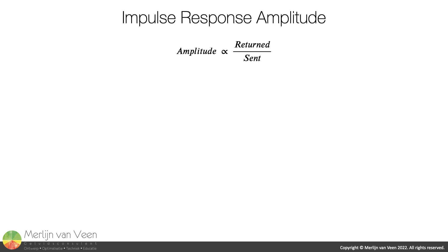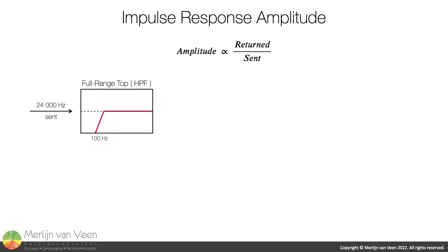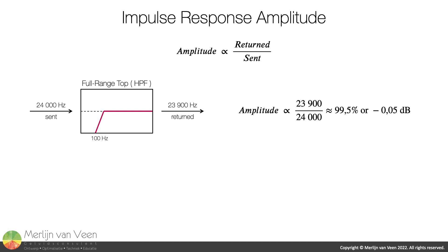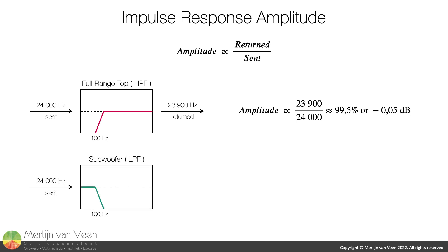The amplitude of an impulse response is proportional to the ratio of the information received by the analyzer with respect to the information transmitted by the analyzer. Assuming a sample rate of 48 kHz, when 24,000 Hz worth of pink noise is injected into the full-range loudspeaker, pretty much all of it is returned, so the impulse response's amplitude suffers from little to no attenuation. However, when the same 24,000 Hz worth of pink noise is injected into the subwoofer, less than 1% of all available information is returned. As such, the amplitude of its impulse response is expected to cave by at least 99.5% on a linear scale, or 48 decibels on a logarithmic scale.